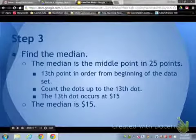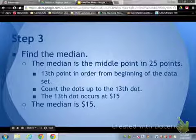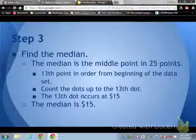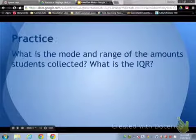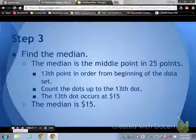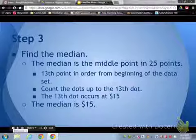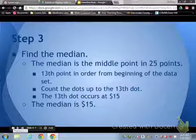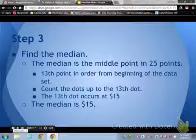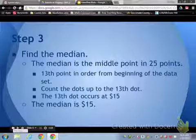Step three, find the median. Once again, the median is the middle point. So if we have 25 data points, the middle is going to be the 13th point. We count to find our middle, or you can cross them off until you get to the middle point. Either way you do it, your 13th dot or your middle is at $15. So your median is $15.